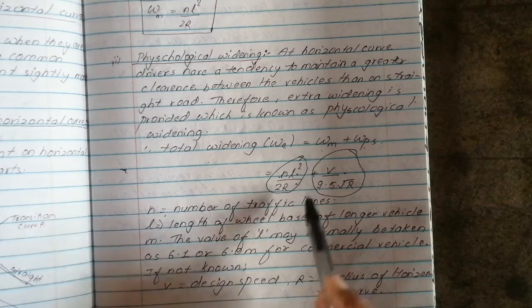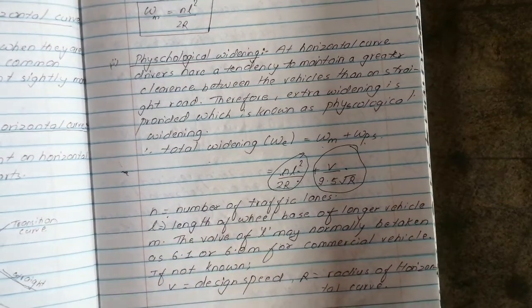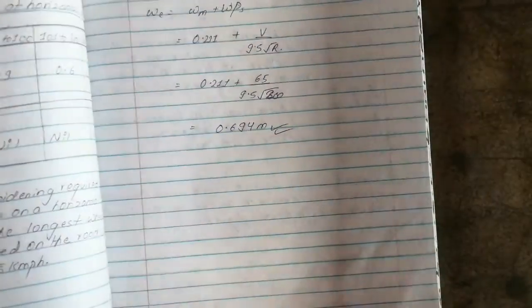Where V is equal to design speed, and R is radius of horizontal curve. This is the most important question.